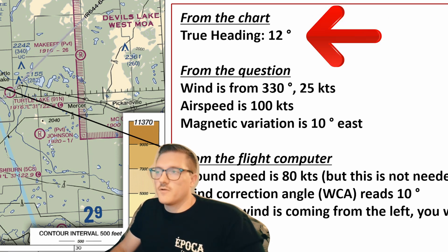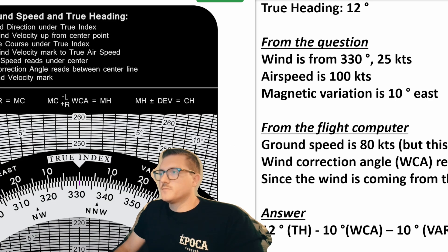Now we need to do the wind correction problem part. So the information they gave us from the question says the wind is at 330 at 25 knots and our airspeed is 100 knots. So we need to go ahead and calculate our wind correction angle. Our wind is from 330 at 25 knots.